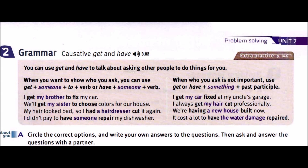You can use get and have to talk about asking other people to do things for you. When you want to show who you ask, you can use get plus someone plus to plus verb, or have plus someone plus verb. I get my brother to fix my car. We'll get my sister to choose colors for our house. My hair looked bad, so I had a hairdresser cut it again. I didn't pay to have someone repair my dishwasher.